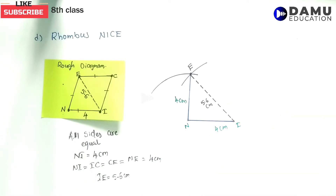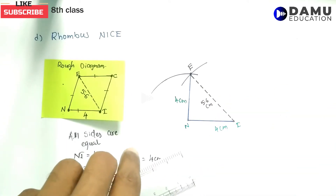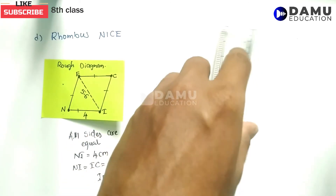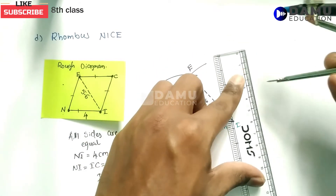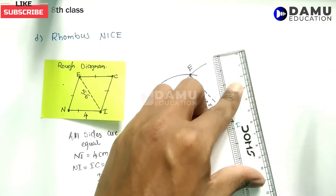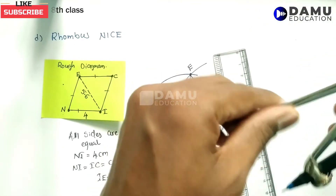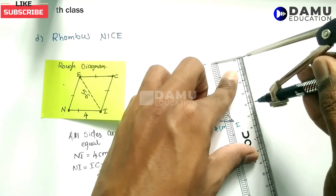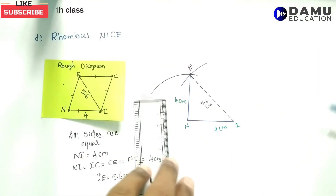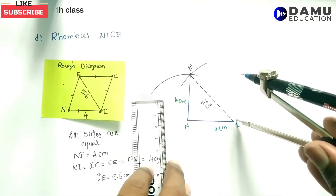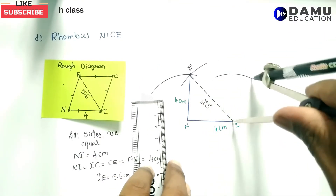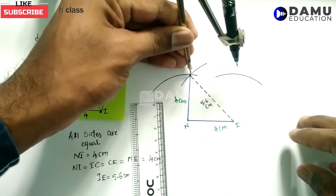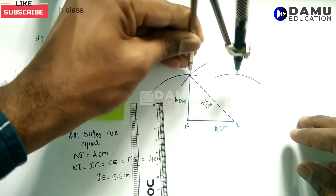Now we need to go with this. Again 4 centimetres, 4 centimetres. We need to check that 4 is there. Make it 4 centimetres. From I, draw one arc of 4 centimetres. From E also, draw one arc of 4 centimetres.